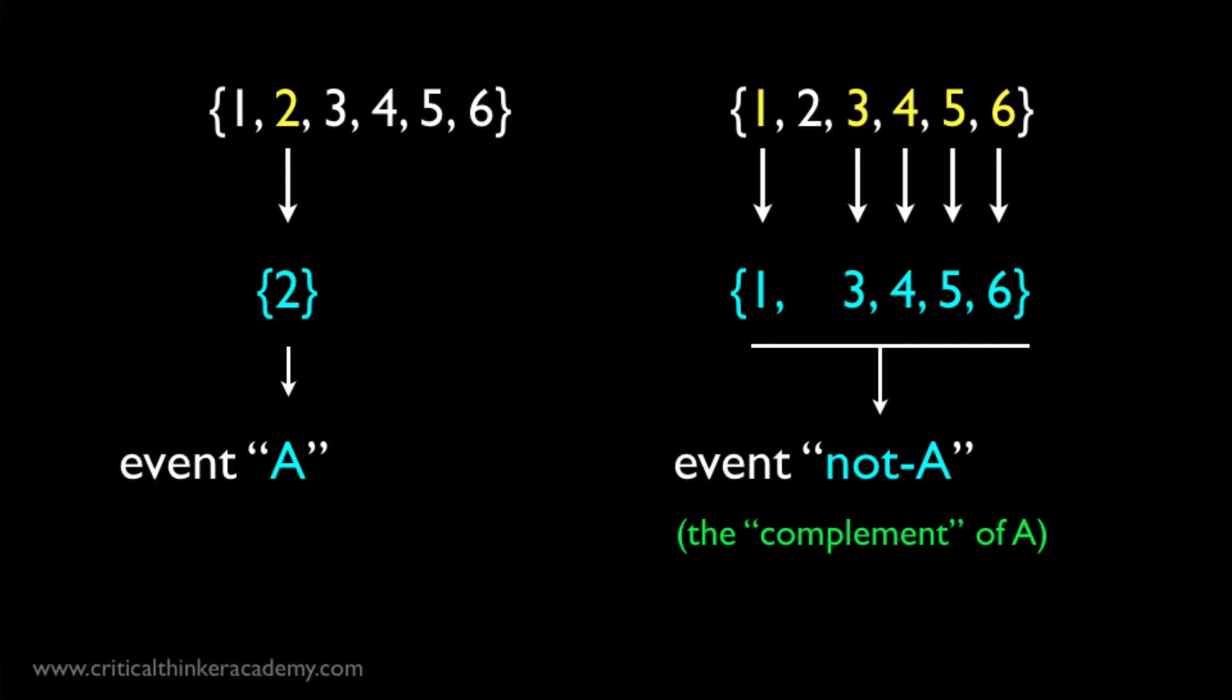The general point is that given a space of possible outcomes, you can represent an event A as a subset of that space. And the negation of A, not A, is represented by the complement of that set, all the members of the space that are not A.